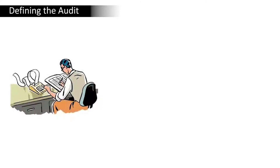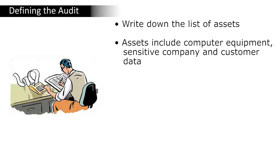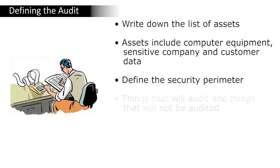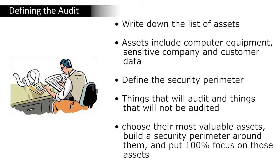The first step is defining the audit. The first job of an auditor is to define the scope of the audit, which means writing down a list of assets. Assets include computer equipment, sensitive company and customer data, and things important to the business that require time and money. Once there is a lengthy list of assets, one must define the security perimeter. A security perimeter segments assets into two buckets: things that will be audited and things that will not. One must choose their most valuable assets, build a security perimeter around them, and put 100% focus on those assets.